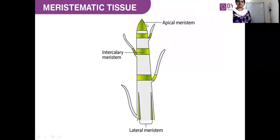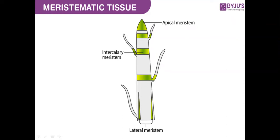In the previous class we studied about meristematic tissue. Let us quickly recall: it is a collection or group of living cells located at specific locations that divide continuously to add new cells to the plant body. The cells of meristematic tissue are similar in structure with thin cell walls made of cellulose. They can be rounded, oval, polygonal, or rectangular, compactly arranged without intercellular spaces, and each cell has dense cytoplasm and a prominent nucleus.